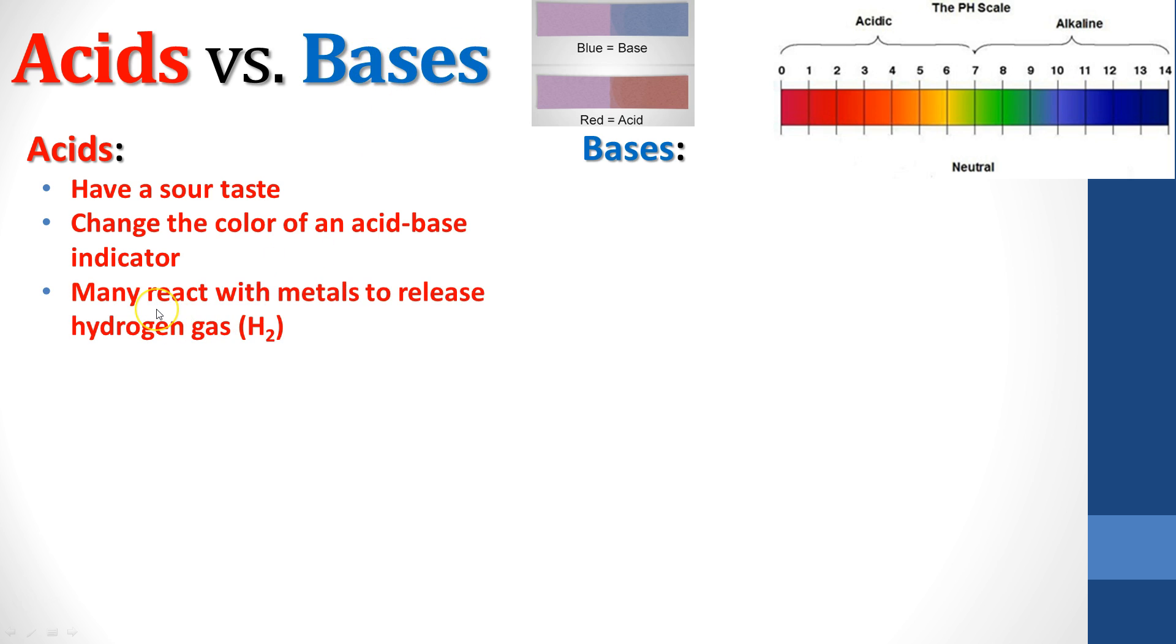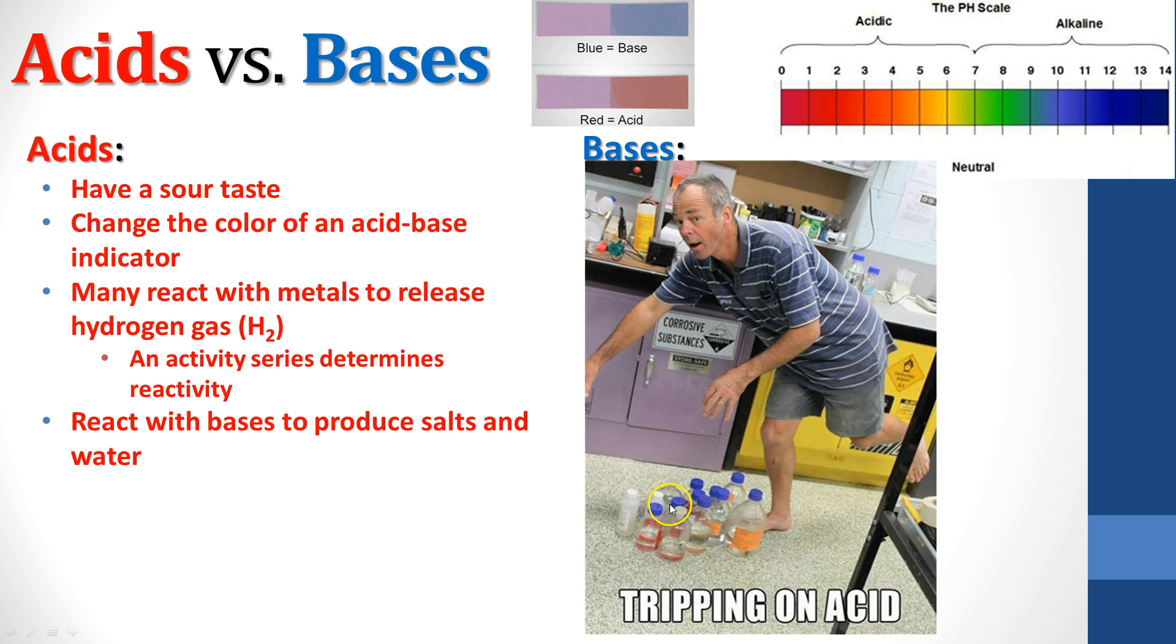Acids are also going to react with metals at times to release hydrogen gas H2. An activity series that we talked about before is going to determine reactivity. It's going to tell you when something can react and when it can't. Acids will also react with bases to produce salts and water in a neutralization reaction. We'll go into that one in a later unit.